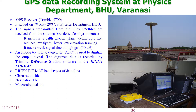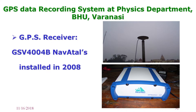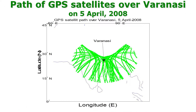The receivers provide data in RINEX format, which is compatible with any software system. RINEX format gives three types of files: observational, navigational, and meteorological. The GSV 404 is a Navatal system installed in 2008. Both systems run successfully in the physics department. They provide satellite sky-view paths, showing different satellite trajectories over the station.